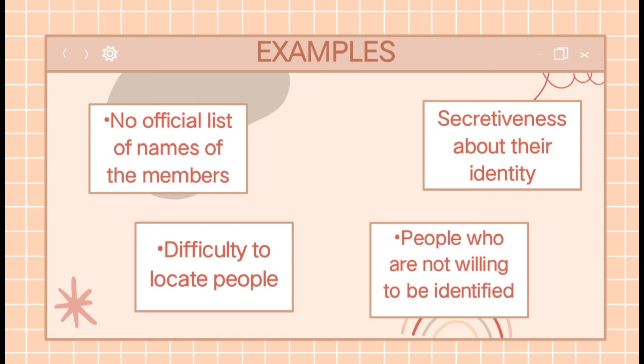Second is Difficulty to Locate People. People with rare diseases are quite difficult to locate. However, if a researcher is carrying out a research study similar in nature, finding the primary data source can be a challenge. Once he or she is identified, they usually have information about more such similar individuals. Third is Secretiveness about their identity.